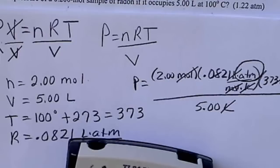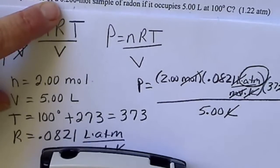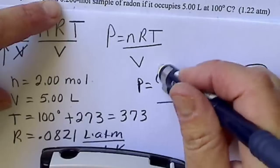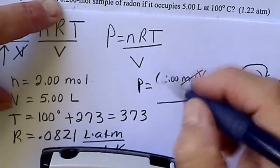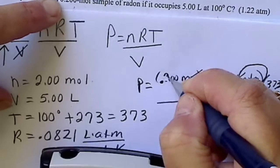Did I write that down right? Oh, this should be 0.2 moles. So I actually am off on the answer by one decimal place.